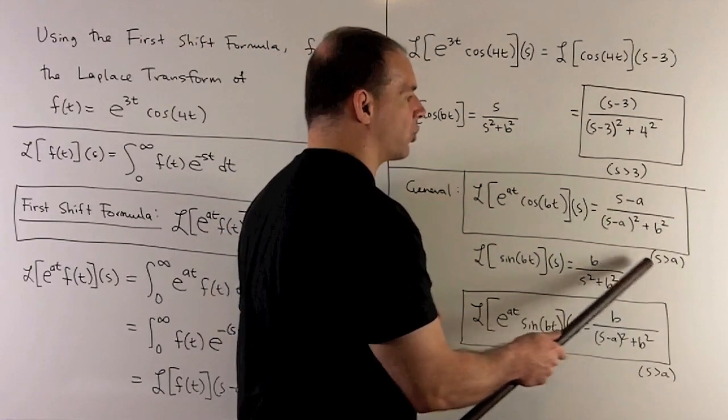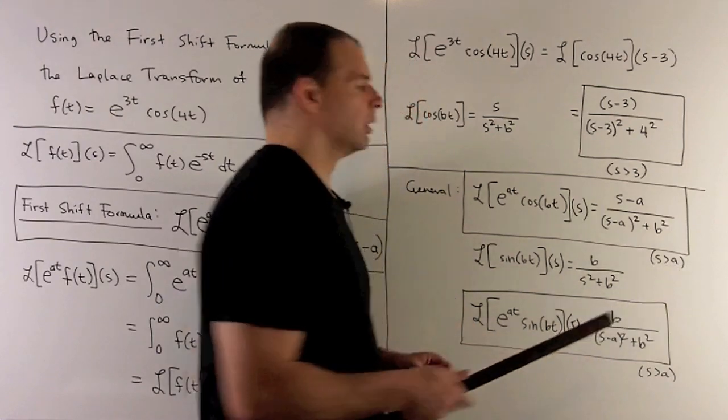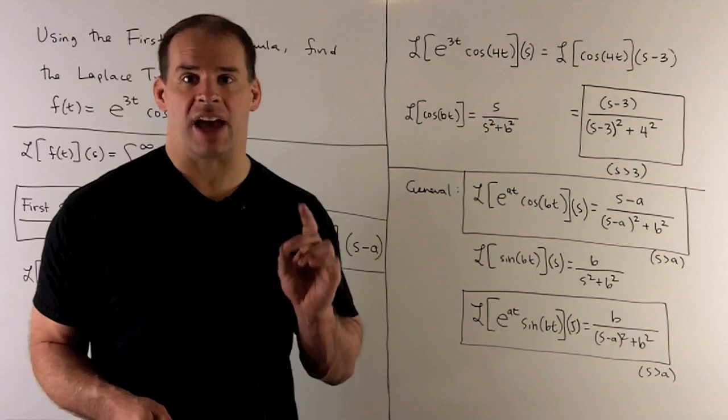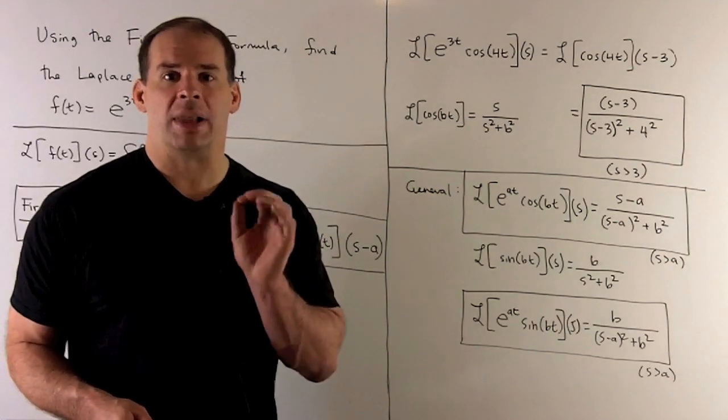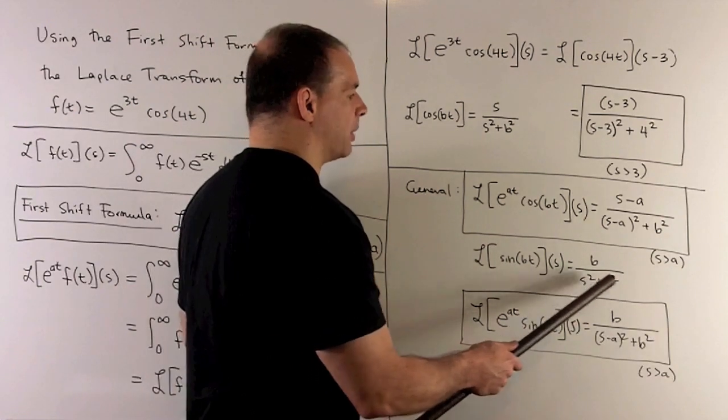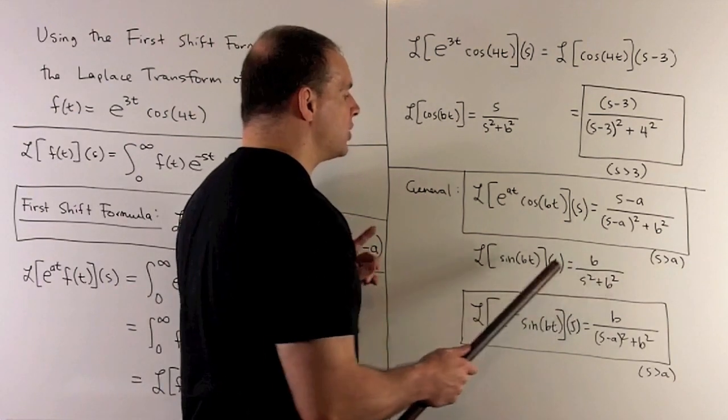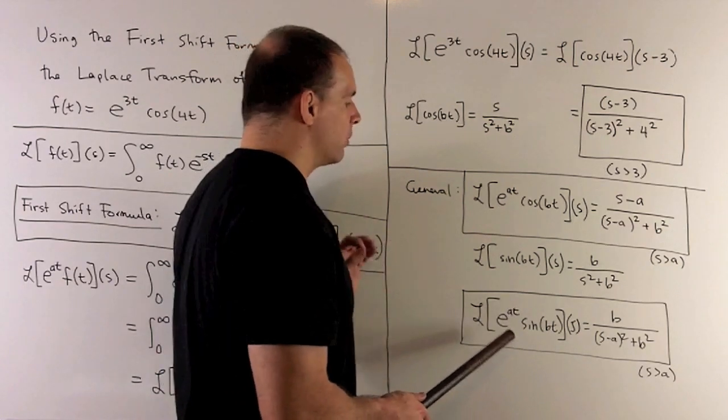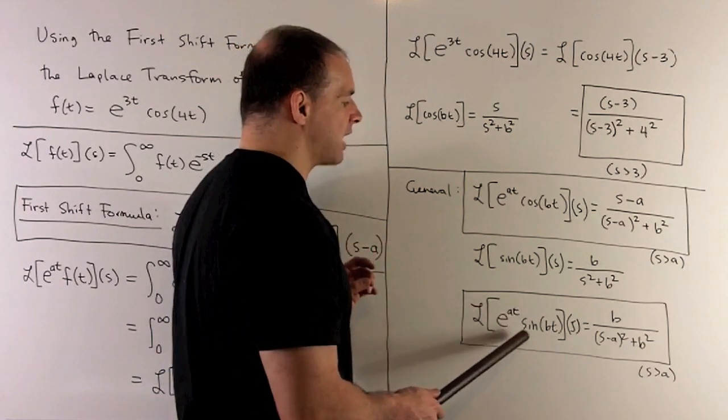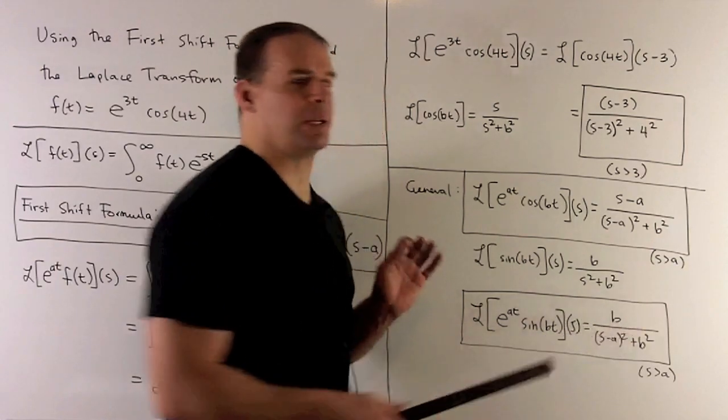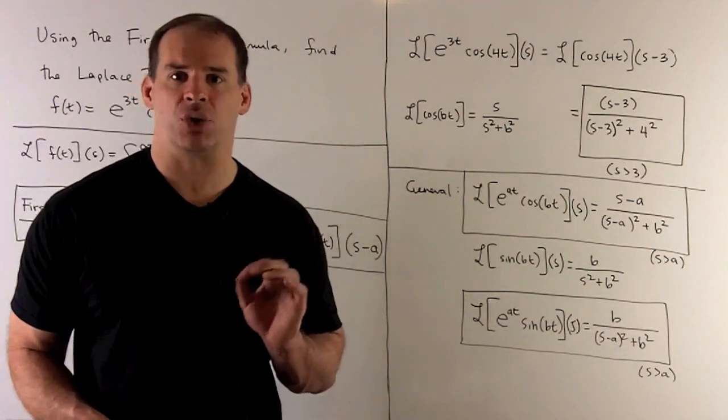While we're here, let's do it for e^(at)sin(bt). Laplace transform of sin(bt) was just b over s² plus b². Now I just put in s minus a wherever I had s. So Laplace transform of e^(at)sin(bt) is b over (s-a)² plus b², with domain s greater than a.